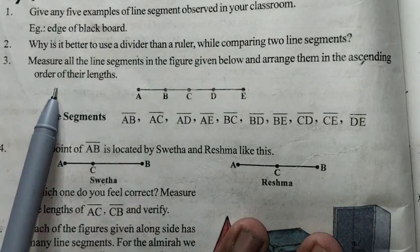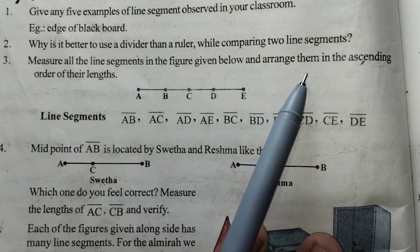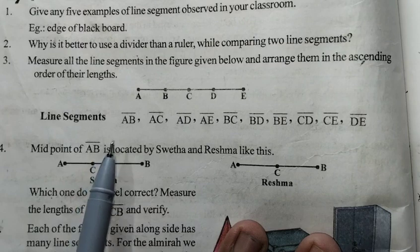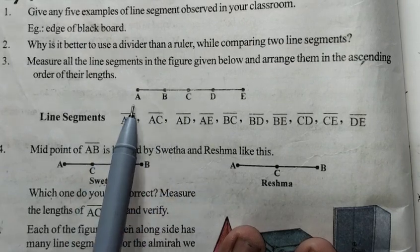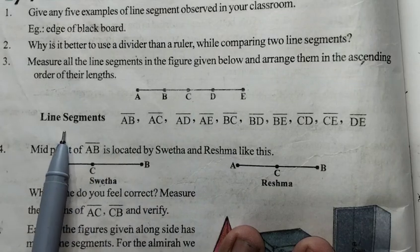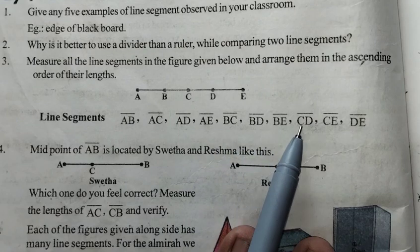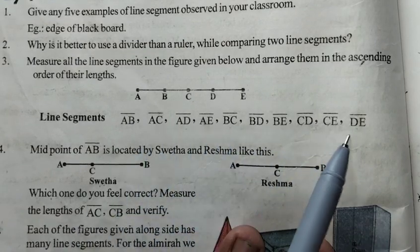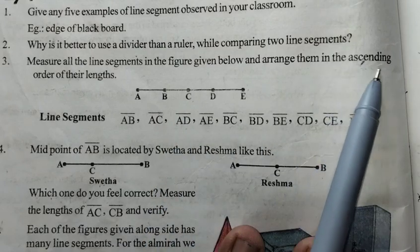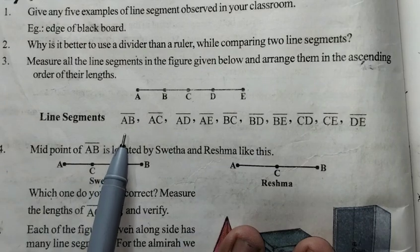Question 3: Measure all the line segments in the figure below and arrange them in ascending order of their lengths. The figure has points A, B, C, D, and E. The line segments to be measured are AB, AC, AD, AE, BC, BD, BE, CD, CE, and DE.